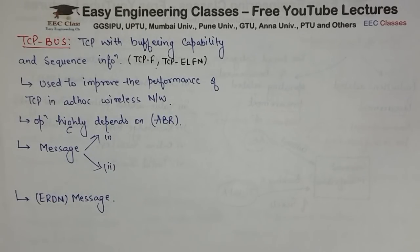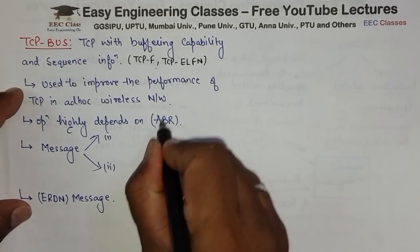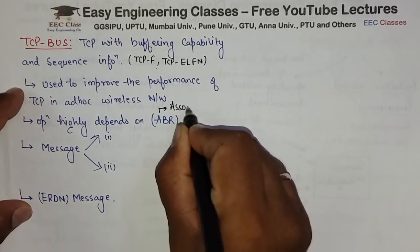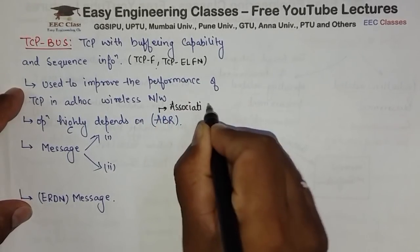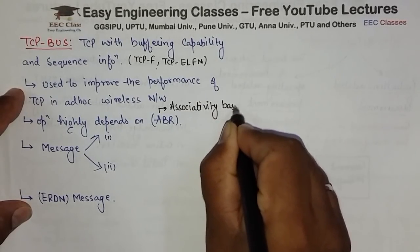Difference jo hai woh abhi hum example se samjhenge. But the operation is highly depending on the ABR. ABR ka matlab hota hai Associativity Based Routing. Toh jo iska operation hai woh Associativity Based Routing pe based hai.